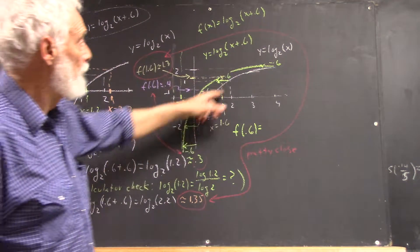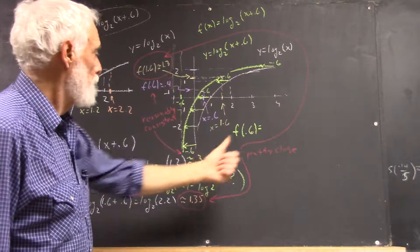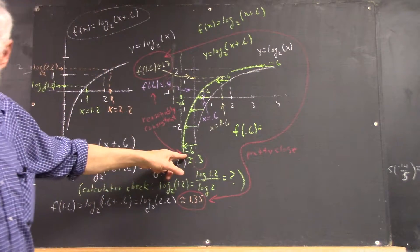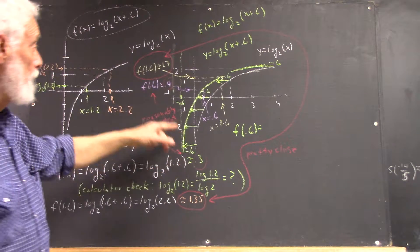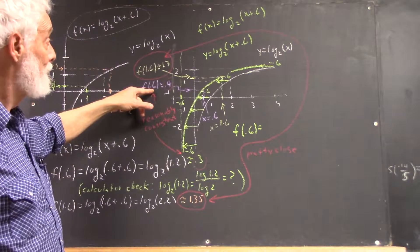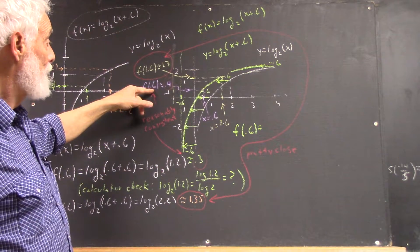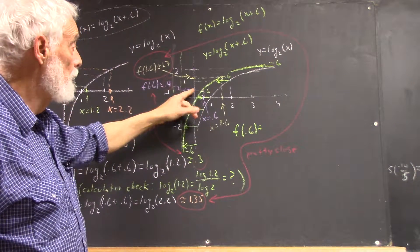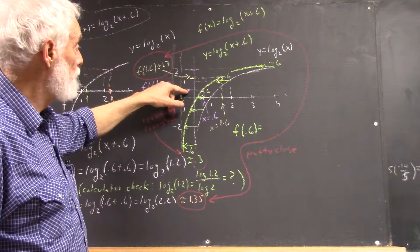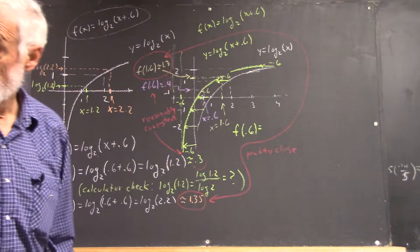Well, all I do then is I take the graph of the log base 2 function, I shift it over 0.6 units to the left, and now if I want to find f of 0.6, I just find 0.6, and I come up here and project over. Now, my estimate in this case was 0.4.